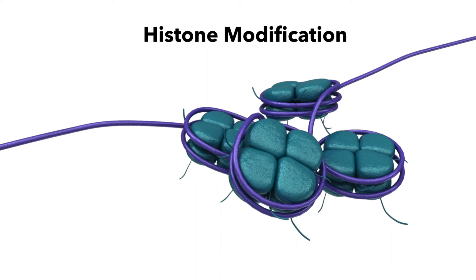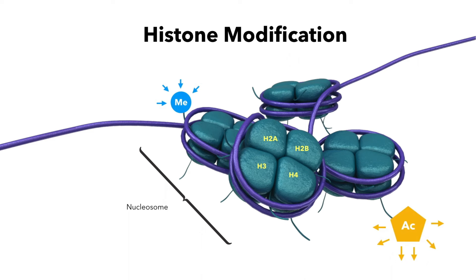The basic repeating unit of chromatin is the nucleosome, in which 146 base pairs of DNA wraps around an octamer of core histones consisting of pairs of H3, H4, H2A, and H2B. The terminal tails of histones protrude out of the nucleosome and are subject to a variety of post-translational modifications, such as acetylation, phosphorylation, ubiquitination, and lysine and arginine methylation.